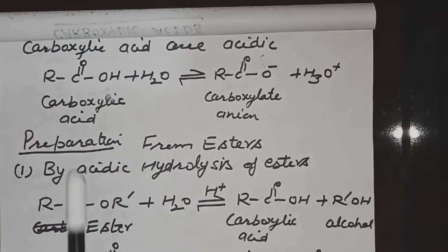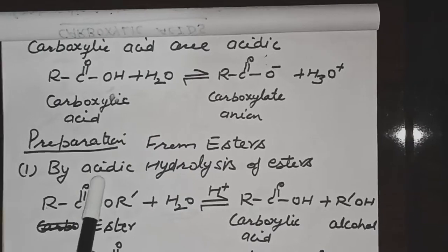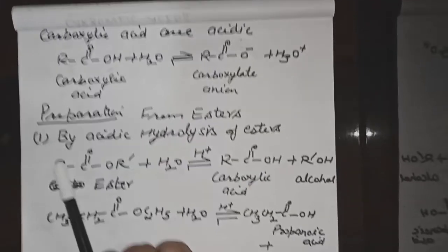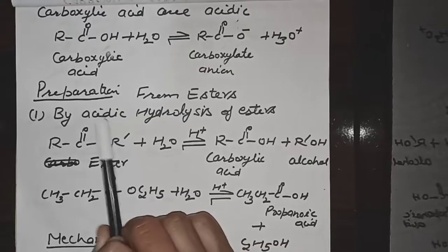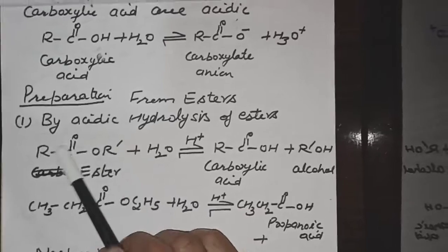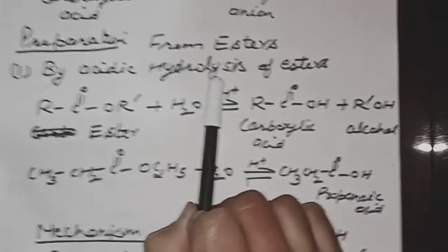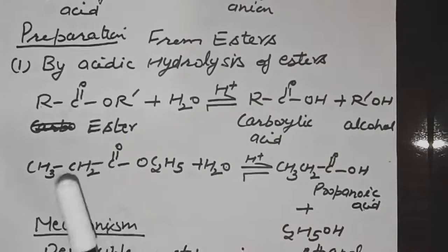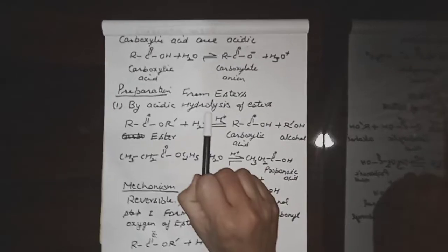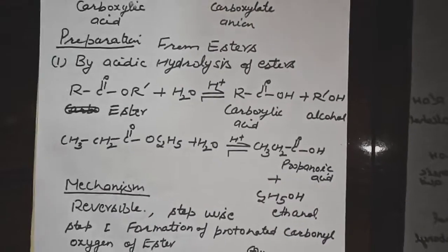The topic in your syllabus is the preparation of carboxylic acids — specifically preparation from esters. Today we will discuss that carboxylic acids can be prepared by hydrolysis of esters, either by acidic hydrolysis or by alkaline hydrolysis. First we will discuss acidic hydrolysis of esters, that is, hydrolysis in the presence of acid.